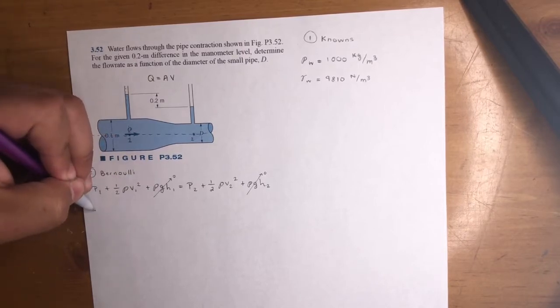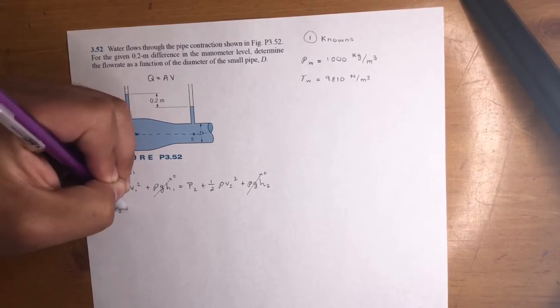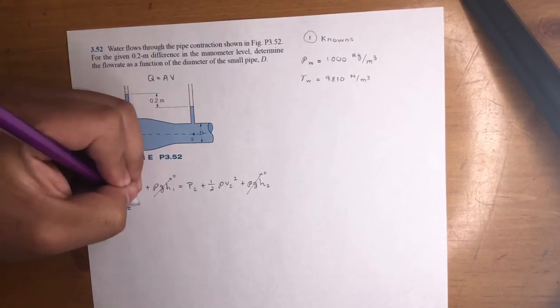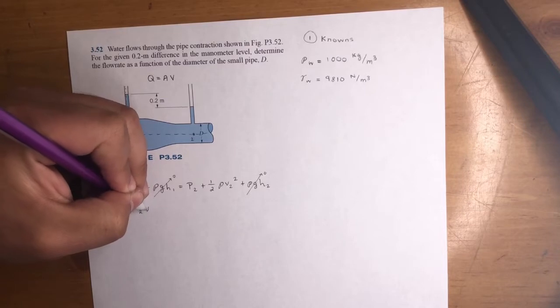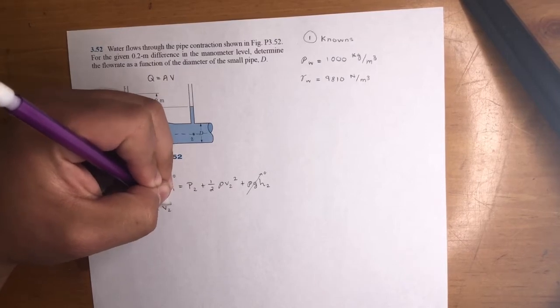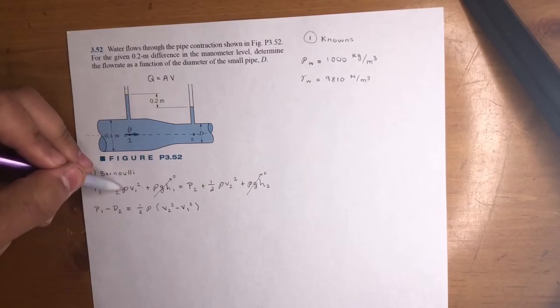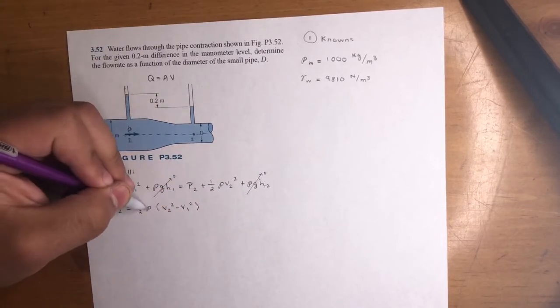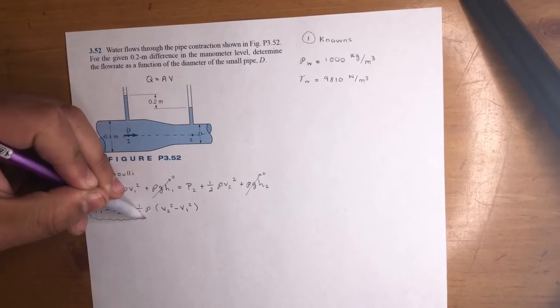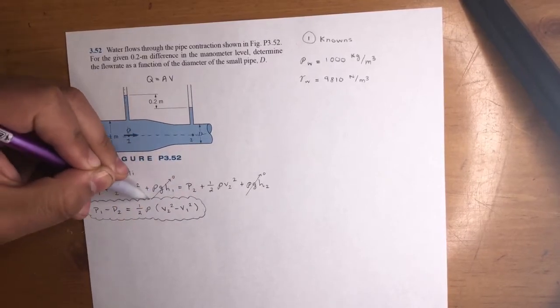So the reason we're doing Bernoulli's is to use the manometers to determine the difference in pressure in terms of velocities. So all the pressures, the two pressures will be on this side. Velocities will be on that side. And you pretty much, this problem is a lot of algebra. So we'll go from there. Let's see. The equation will be P1 minus P2, right? We want the difference in pressure on one side. And then if we move this one over here, we're going to have one half density of water for both. And it's going to be V2 squared minus V1 squared.